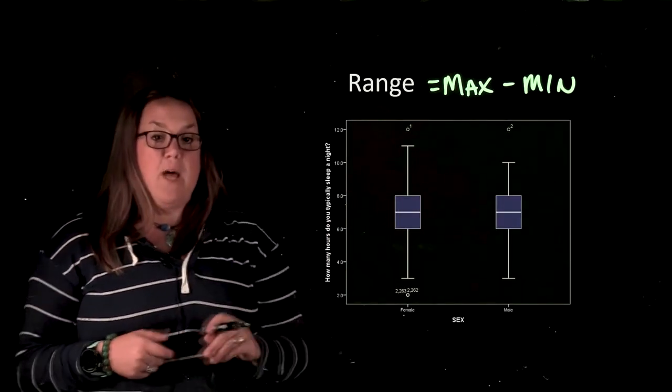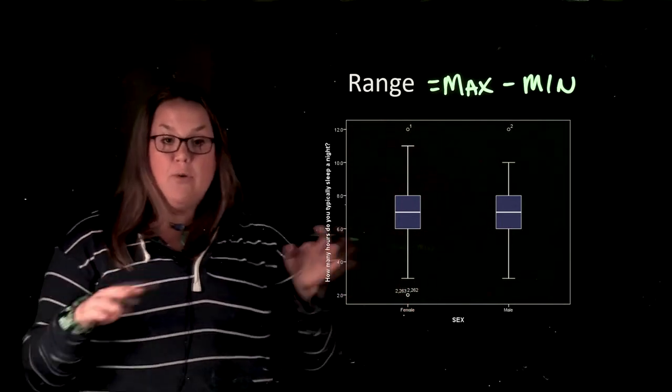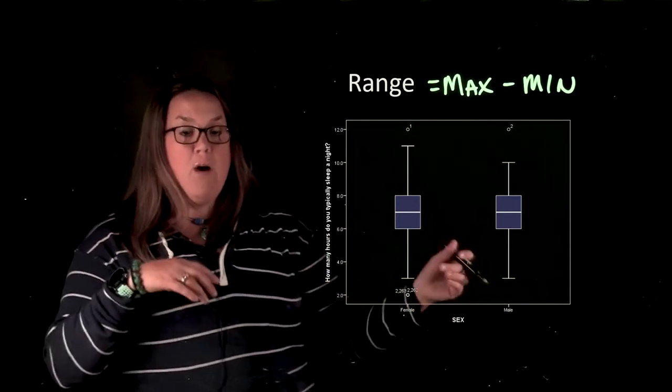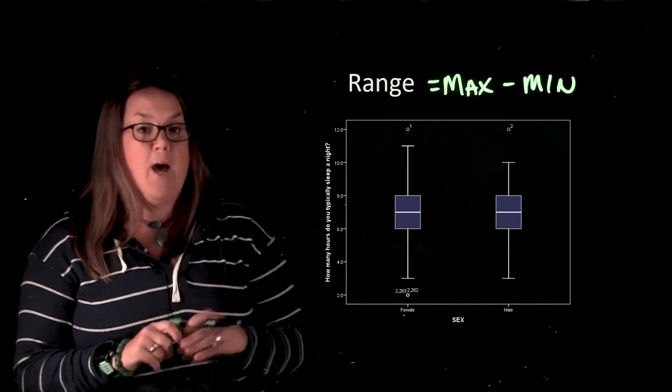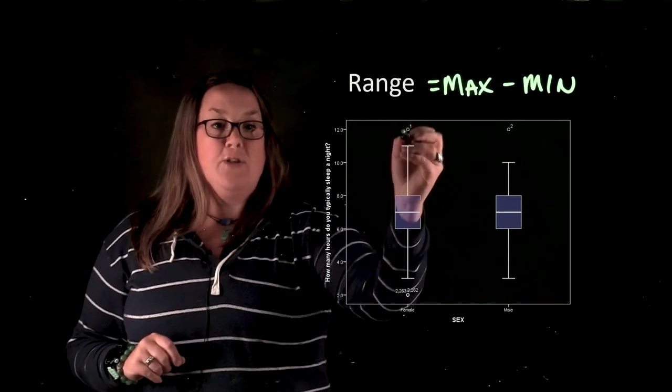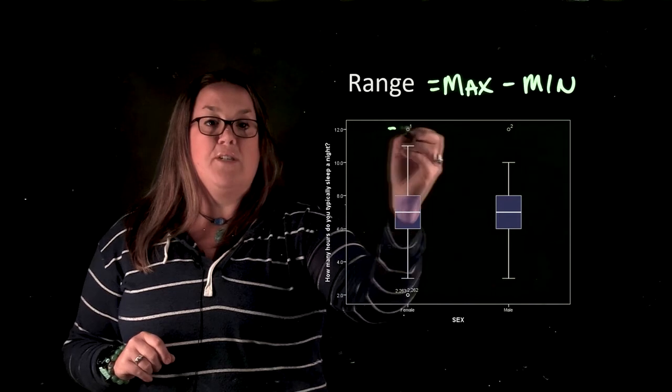So here in this first box plot, you can see that we have two different groups. We have female and we have male. And if I were to calculate the range for this, I need to identify the maximum, which you can actually see for both groups is going to be 12.